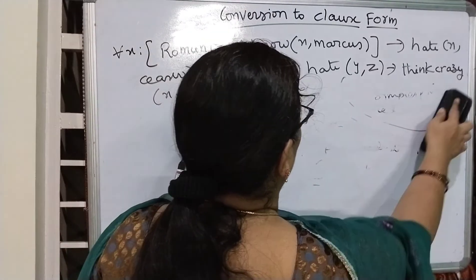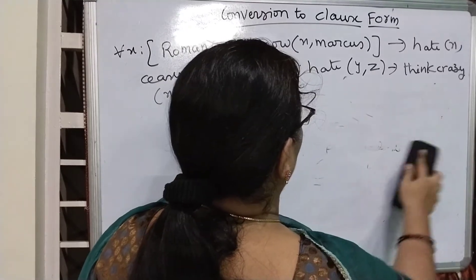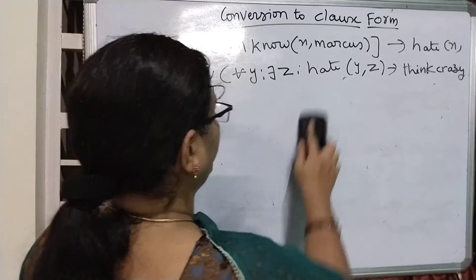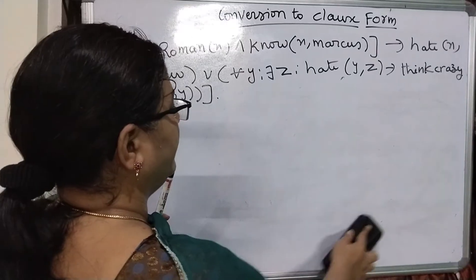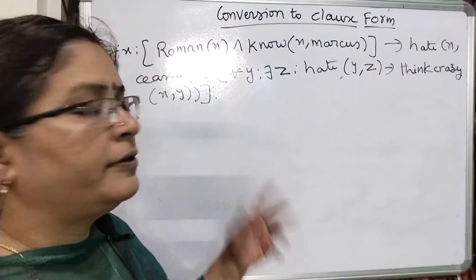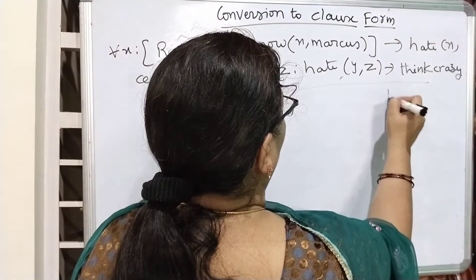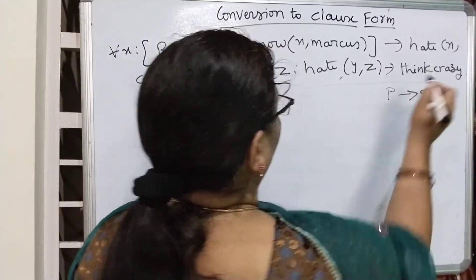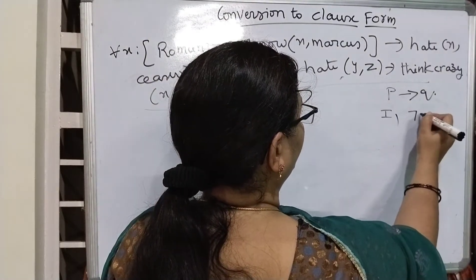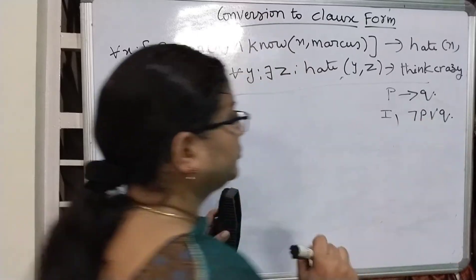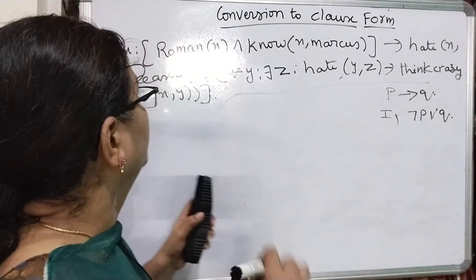We cannot do resolution when the expression is in a complex form like we are currently seeing. Before going to resolution, we have to reduce the complexity of the literals and their connections. This entire statement will look like p implies q. The first inference rule says p implies q is equivalent to negation p or q. So we have to convert the entire statement into the form of negation p or q.